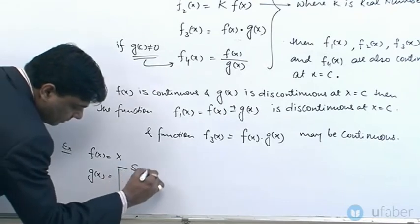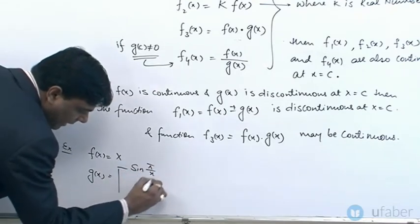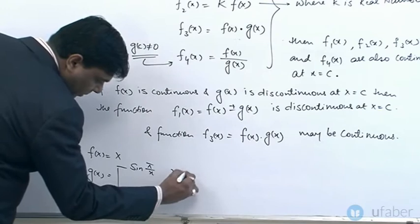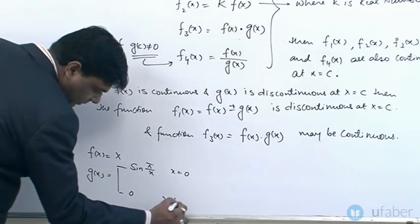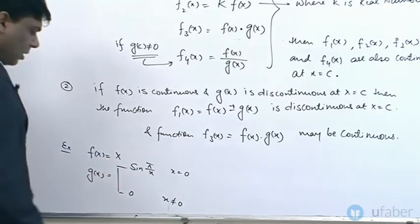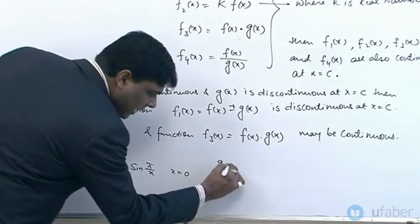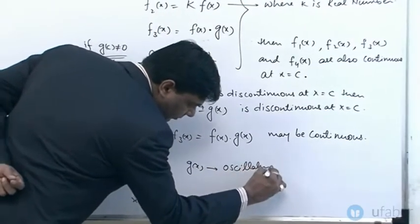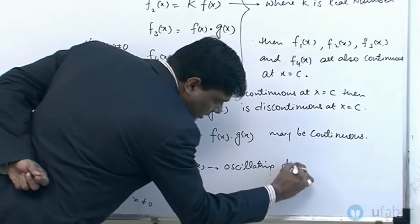So g(x) is sin(π/x) when x is not equal to 0, and g(x) equals 0 when x is equal to 0. If we look at this, g(x) is discontinuous because this is an oscillating point discontinuity. So g(x) is oscillating-point discontinuous.